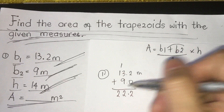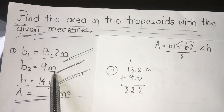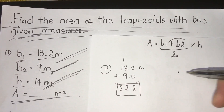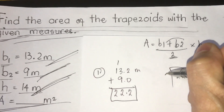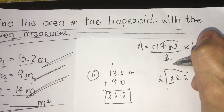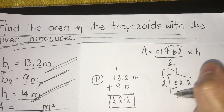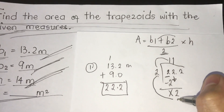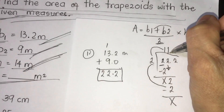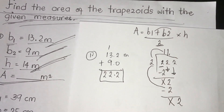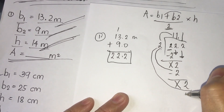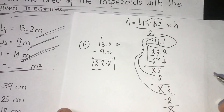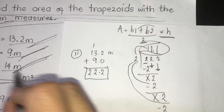So we have 22.2 for our b1 plus b2. The next step is to divide by 2. Our dividend is 22.2 and our divisor is 2. 22 divided by 2 is 11, then bringing down the decimal gives us 11.1. After dividing, we're going to multiply by the height which is 4 meters.